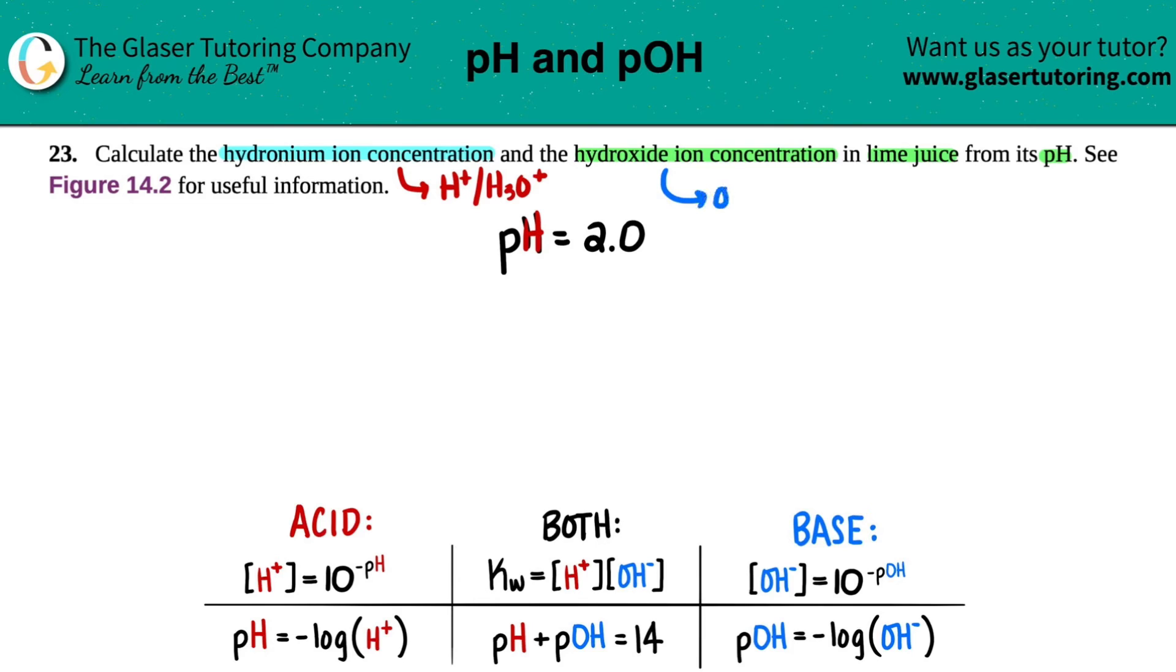Hydroxide ion is OH minus. There's no other alternative. So we just have to basically find the concentration of H plus and OH minus.